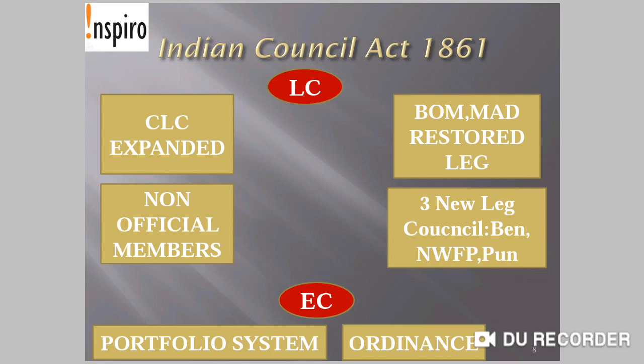Three new Legislative Councils were also formed in Bengal, Northwest Frontier Provinces, and Punjab. In Bengal it was formed in 1862, in Northwest Frontier Provinces in 1866, and in Punjab in 1897.